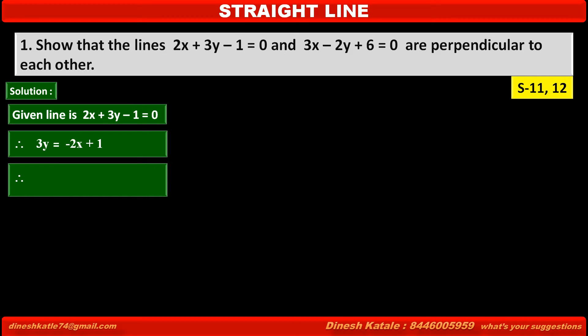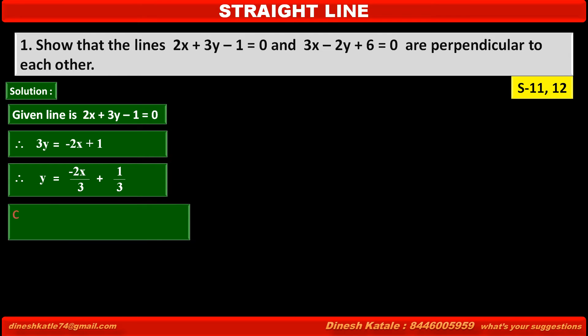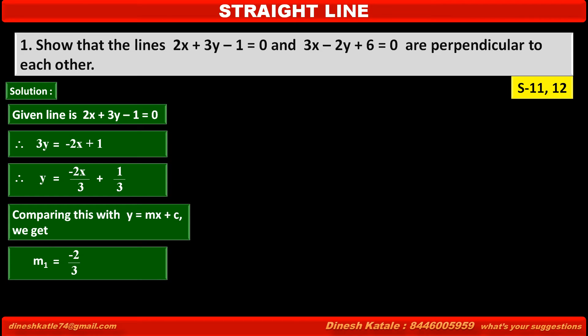Dividing both sides by 3, we get y is equal to minus 2 upon 3 times x plus 1 upon 3. Comparing this with y is equal to mx plus c, we get slope of the first line m1 is equal to minus 2 upon 3.